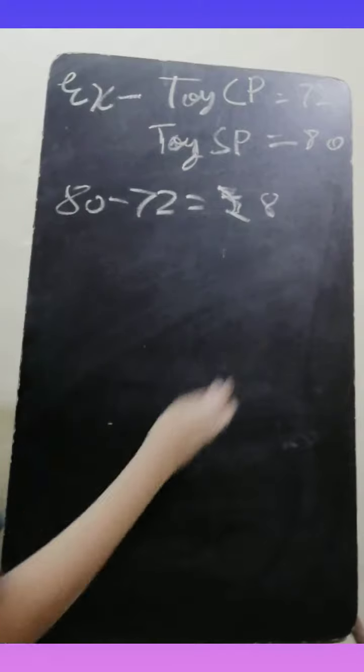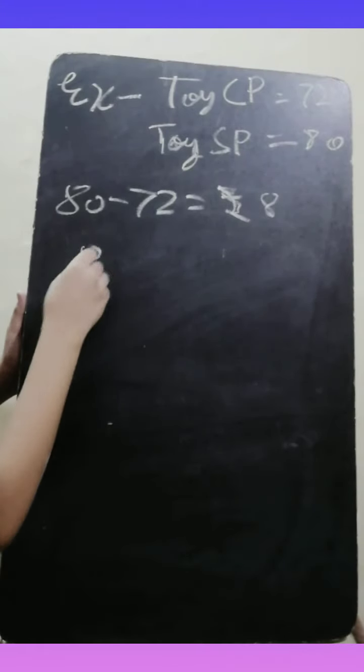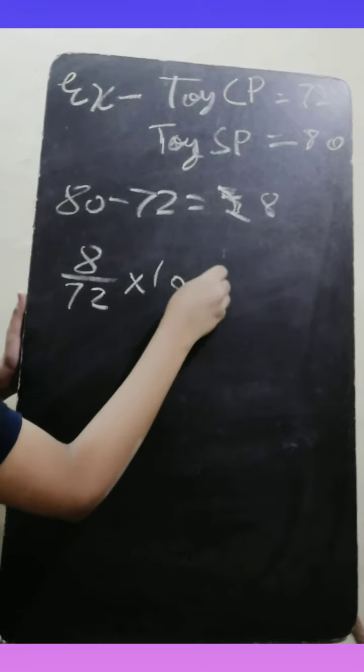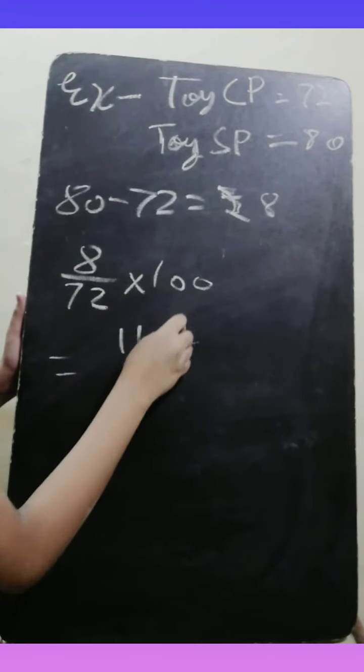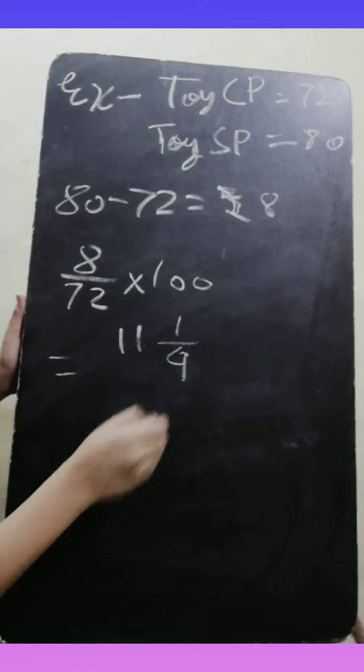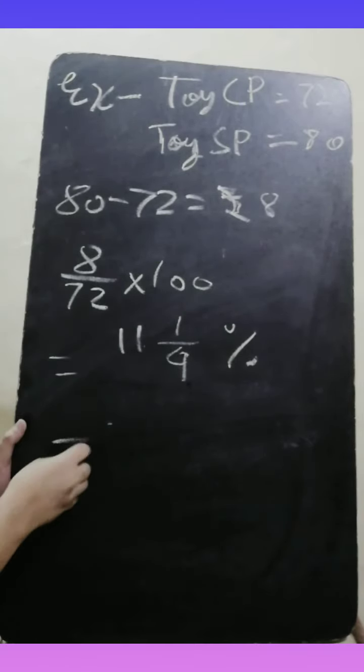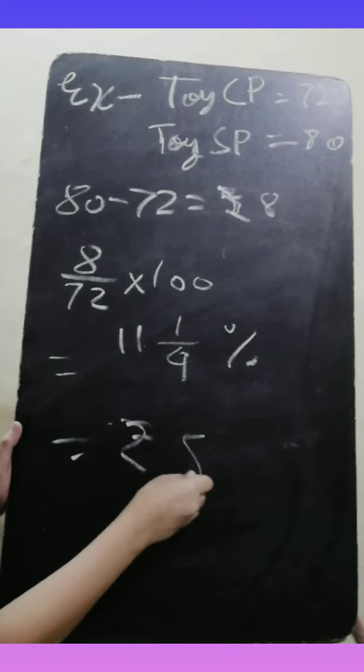The profit is 8 rupees. We calculate 8 divided by CP, which is 72, multiplied by 100. Our answer is 11 and 1/9. So the profit percent is 11 and 1/9 percent, and the profit is 8 rupees.